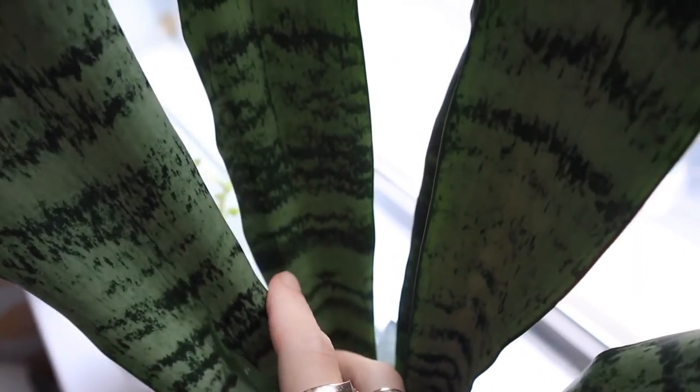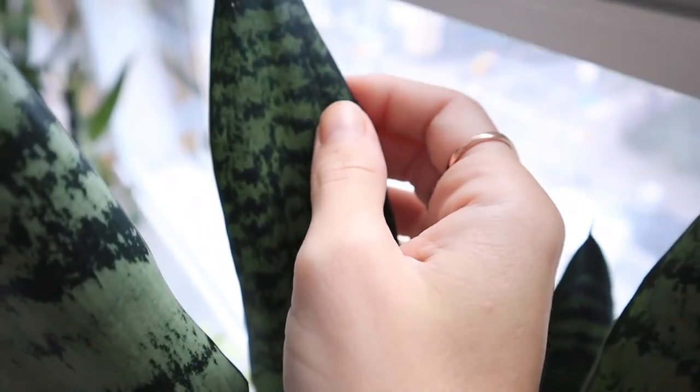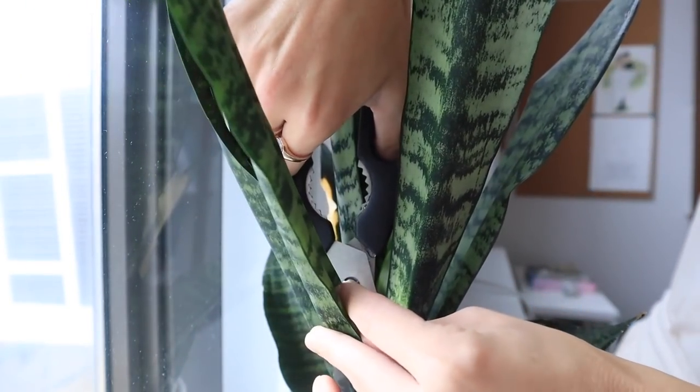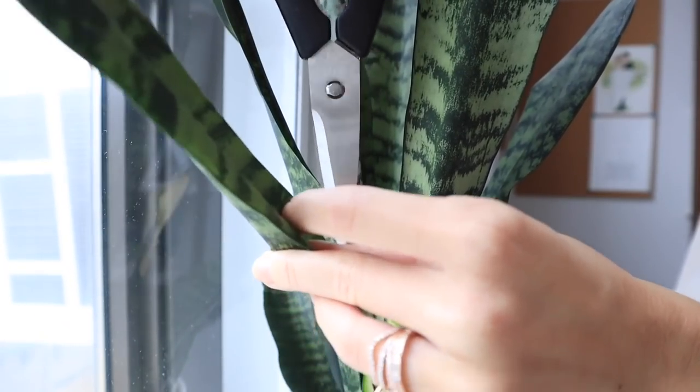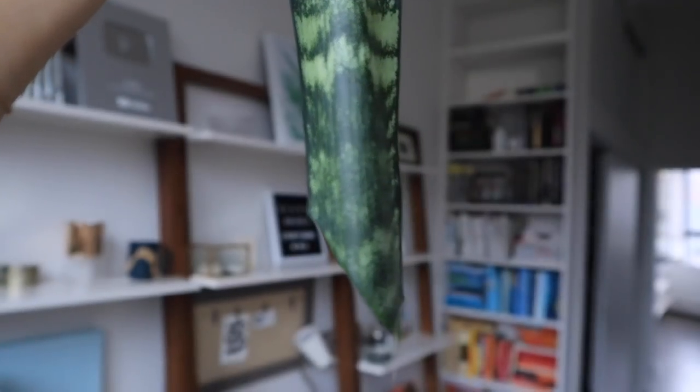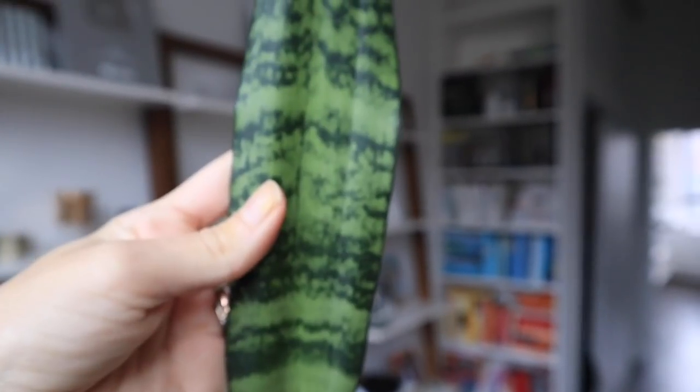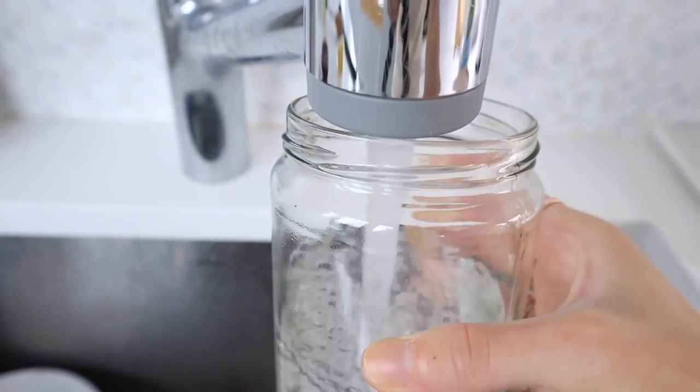My first step was to make the plant clippings. There's a different way to do this for each plant, so I watched a bunch of informational videos to learn. But for snake plants you can basically just cut the leaf, so I chose one on the outside. Then I put the cutting into some fresh tap water while I cut the rest.